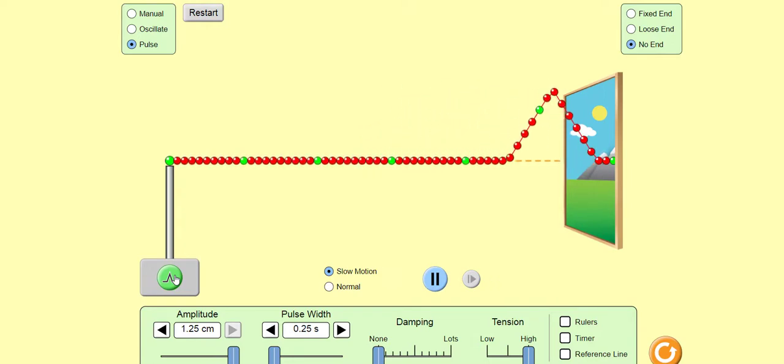You just saw a triangular shaped wave or wave pulse travel to the right along the string. Let's generate another one, but this time we'll pause the simulation soon after it's generated.